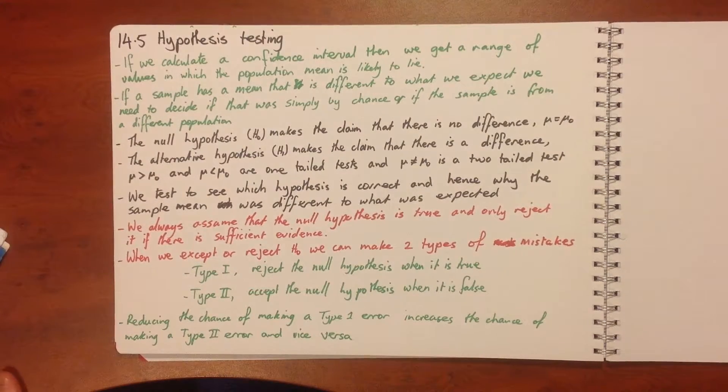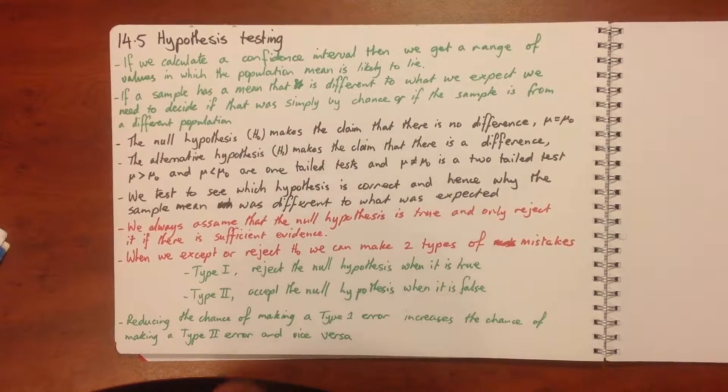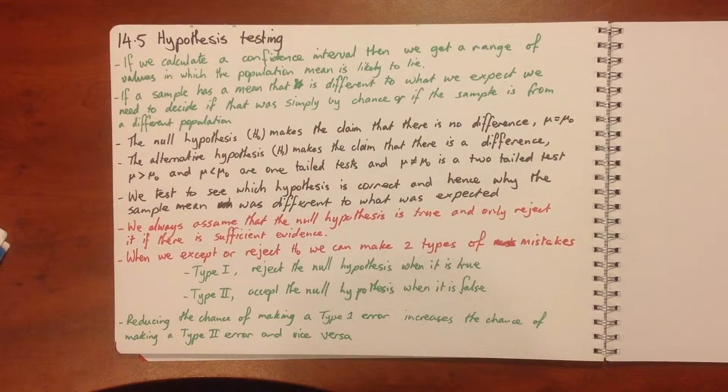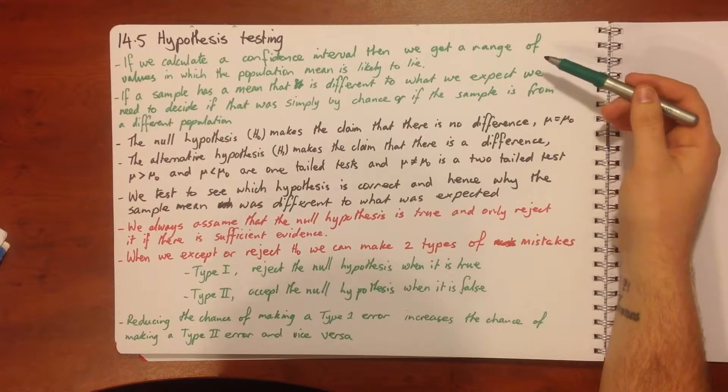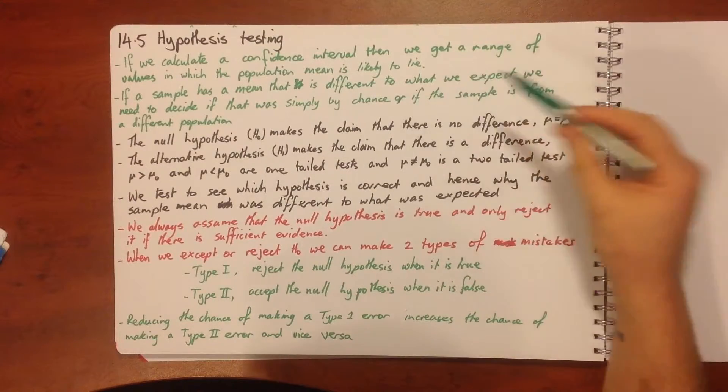In this tutorial we'll be looking at section 14.5 on hypothesis testing. If we calculate a confidence interval then we get a range of values in which a population mean is likely to occur or to lie.